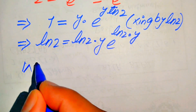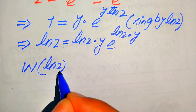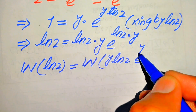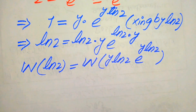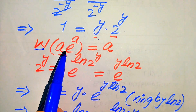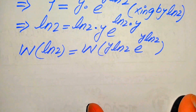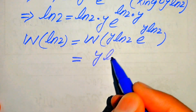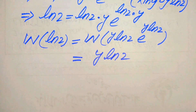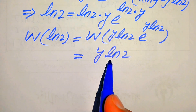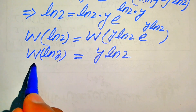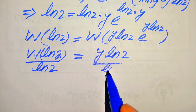We apply the Lambert W function to both sides: W of log 2 equals W of (y times log 2) times e to the power of (y times log 2). The output of this function equals the exponent of e, which is y times log 2. To solve for y, we divide both sides by log 2, and log 2 cancels, giving y equals W of log 2, divided by log 2.